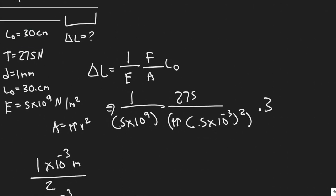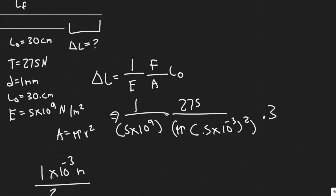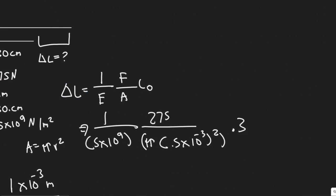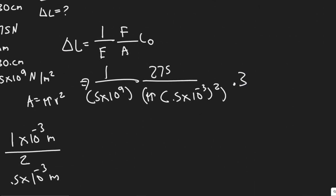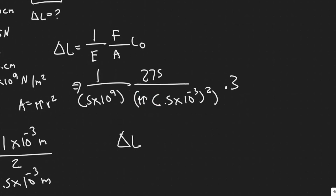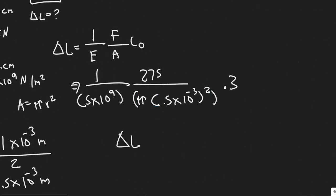Because you basically just multiply it by 10 to the minus 2 or divide by 100. So 0.3 there. This is going to give you, so plug all this in. And then you're doing 1 over 5 times 10 to the minus 9 times 275 divided by pi R squared times 0.3. So go ahead and do all this.